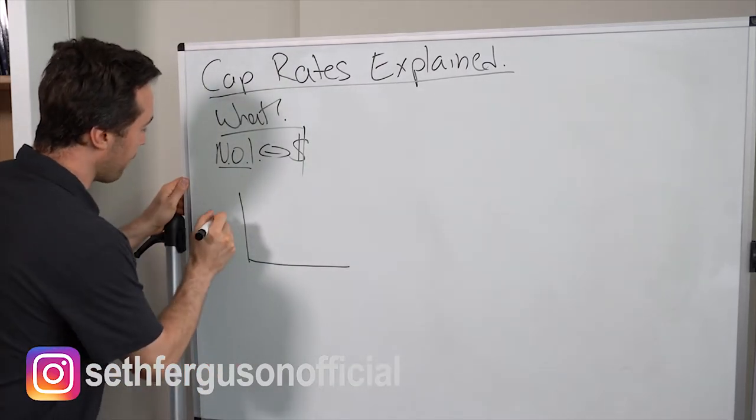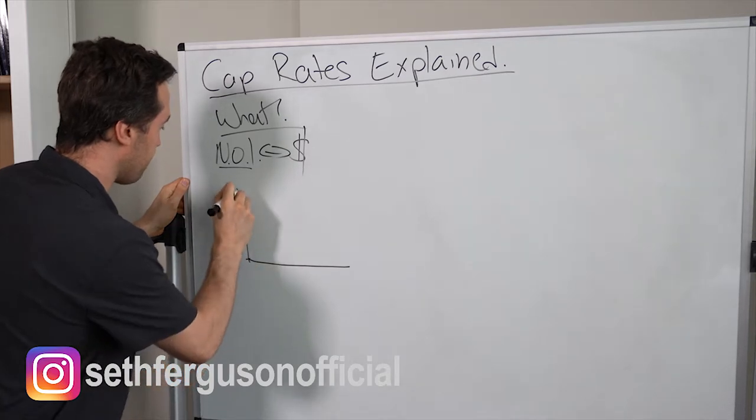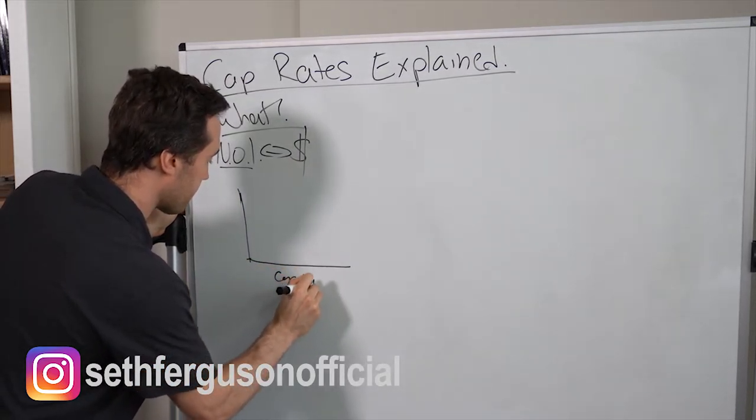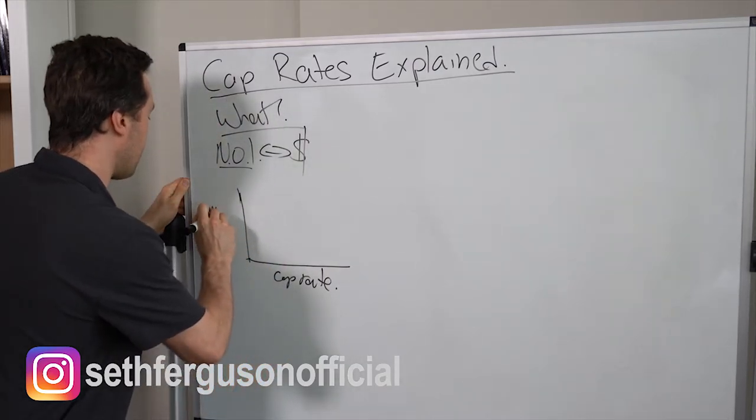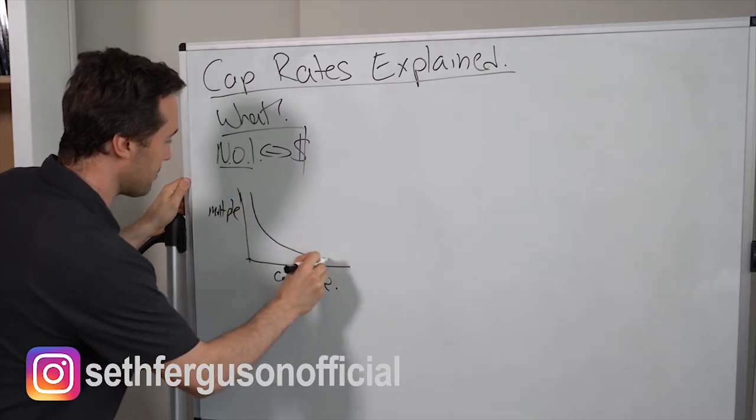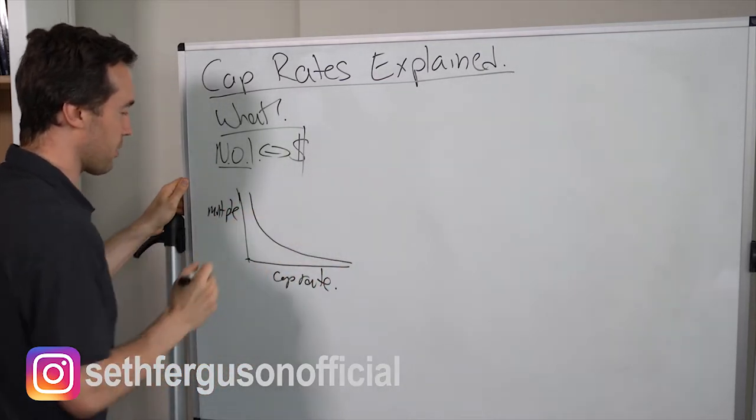So on this graph I'm going to draw, I have the two axes here. So on this axis here, I'm going to have the cap rate. And right here, I'm going to have the multiple. So this graph is going to look like an upside down hockey stick.